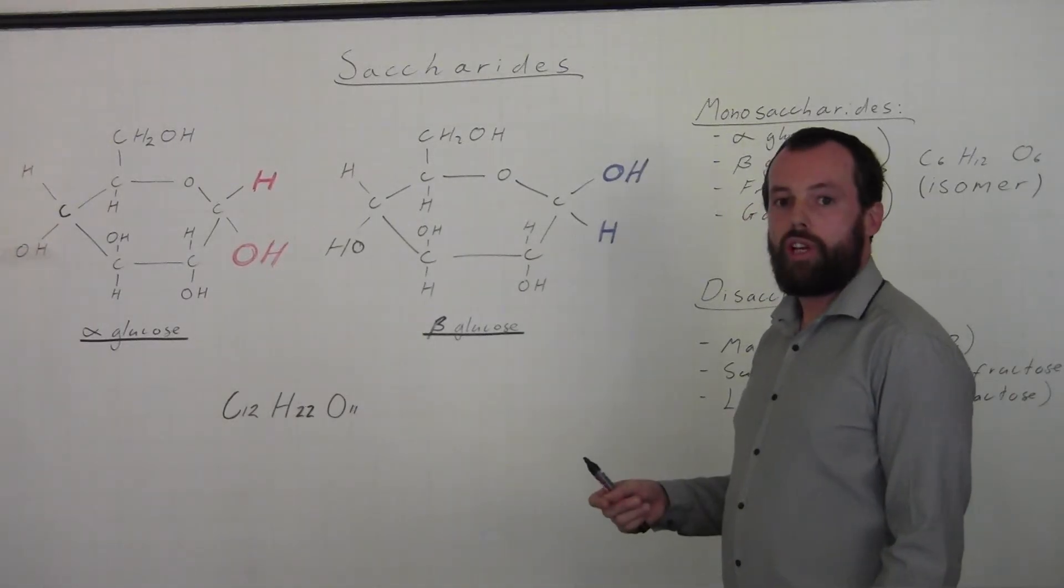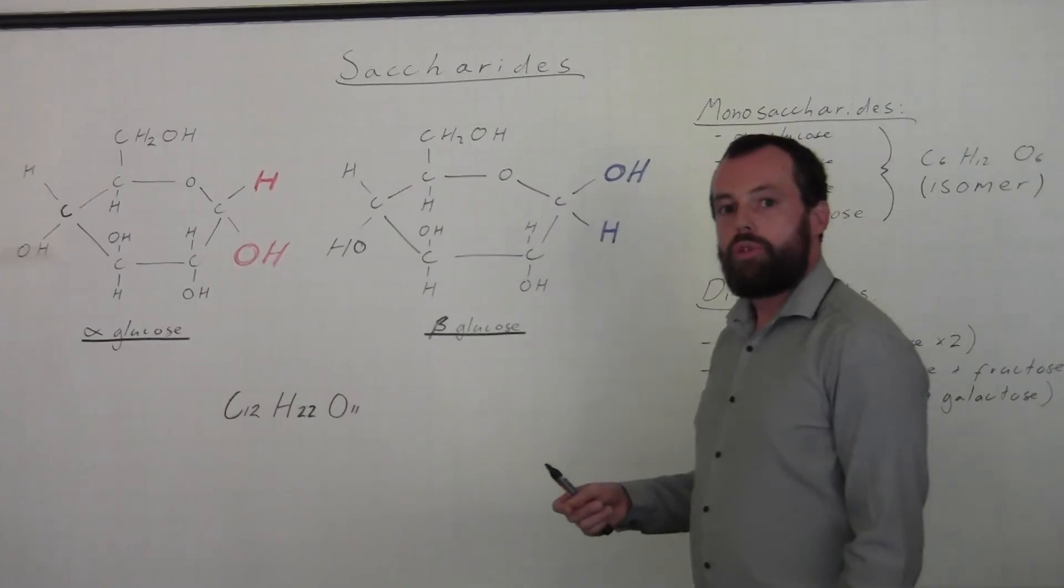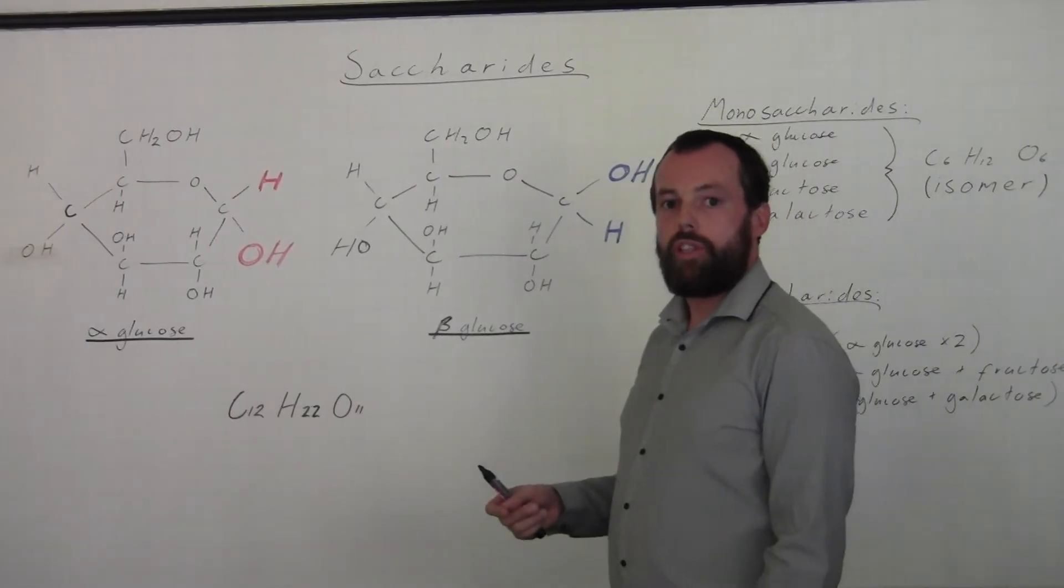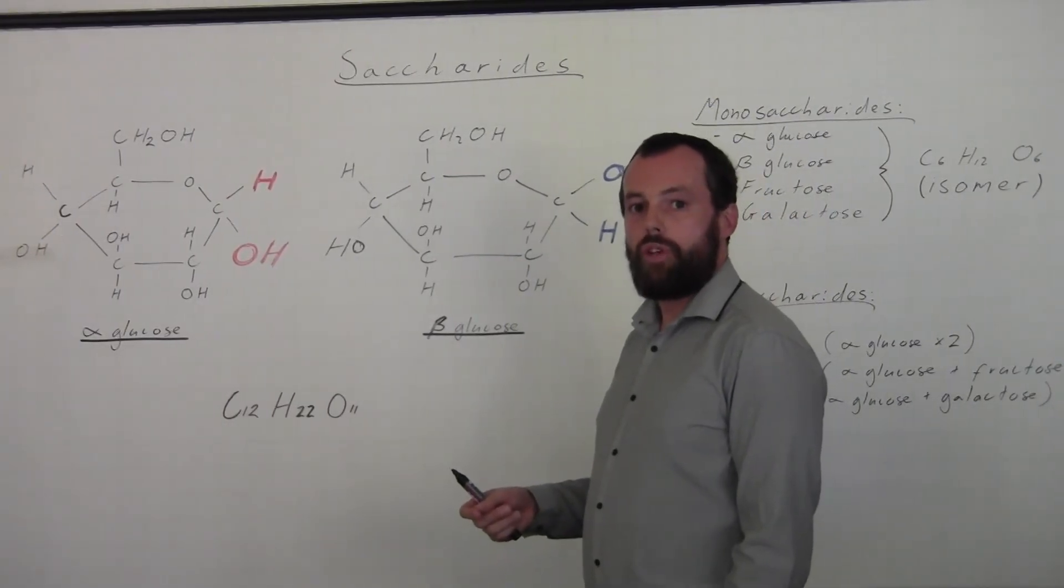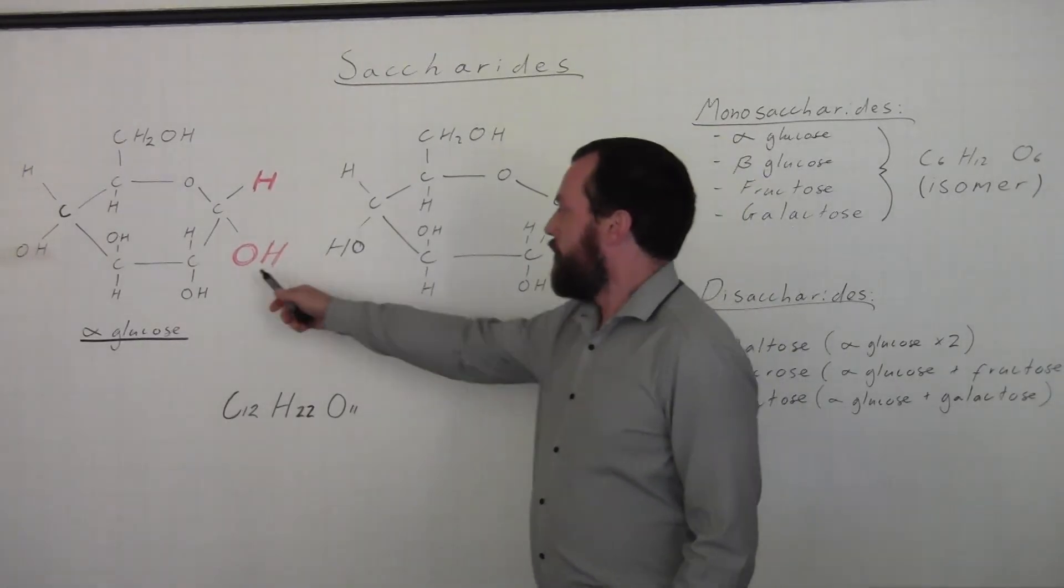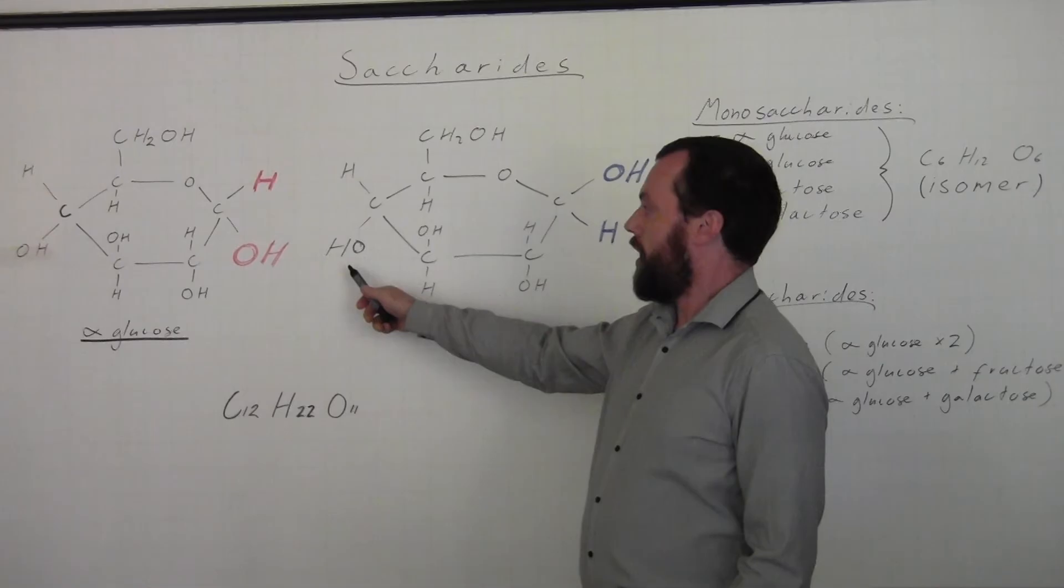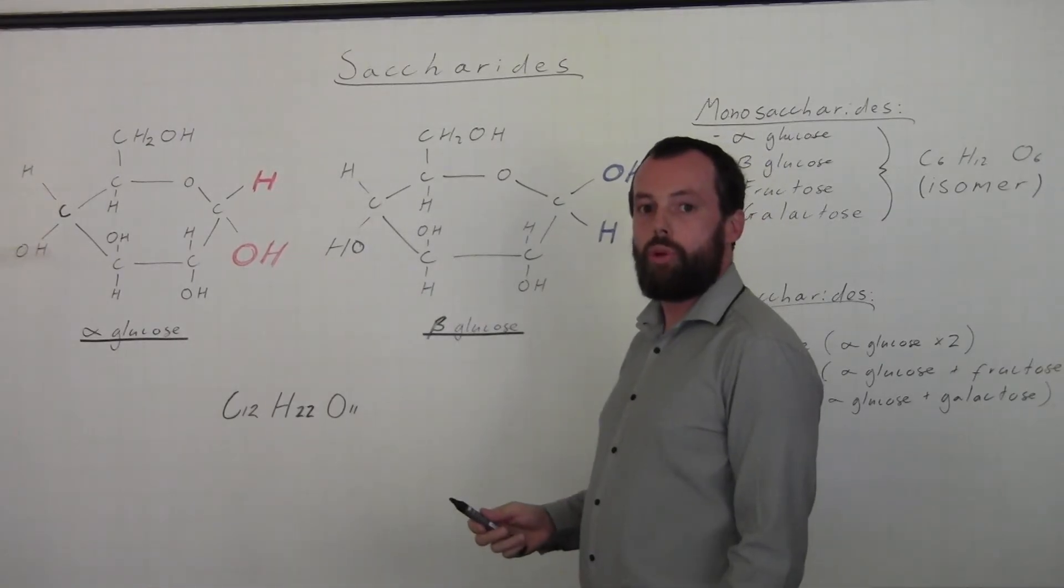So how do we join these two monosaccharides together? We join them together using something called the condensation reaction, so called because it produces water. It involves this OH group and the HO group of these two monosaccharides.